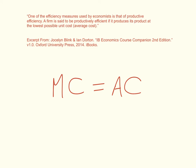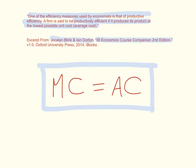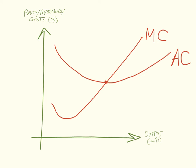Another really important efficiency measure is that of productive efficiency. A firm is said to be productively efficient if it produces its product at the lowest possible average cost — again, from the Blink and Dorton IB Economics course companion e-book. Productive efficiency occurs when a firm produces at a level of output where marginal cost is equal to average cost. In the long run, a perfectly competitive firm will only earn normal profit, which occurs at a price where marginal revenue equals marginal cost and also equals average cost.